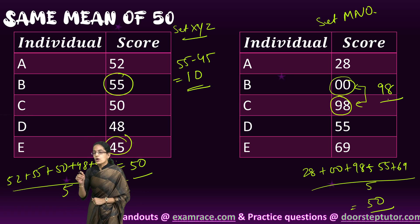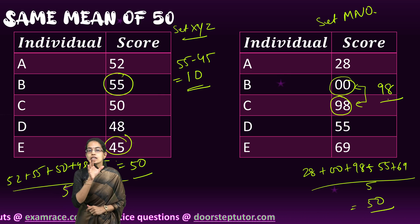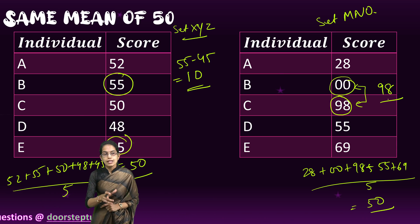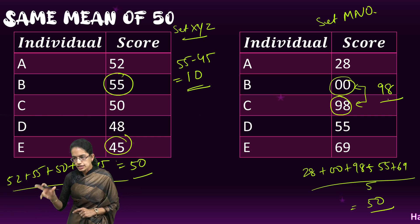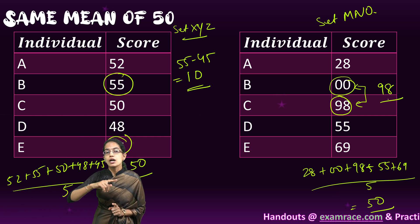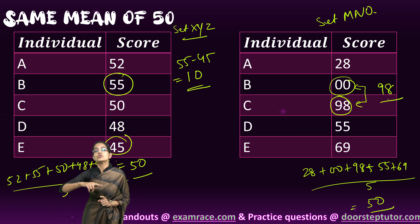Understanding the fact that both of these sets have the same mean, still the range is significantly different. Since the range is different, it gives a better picture in terms of distribution, dispersion, and variability that can be seen.